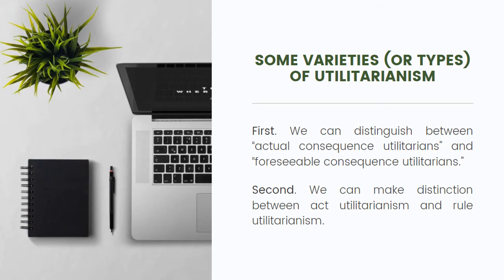What's the difference between actual consequence and foreseeable consequence utilitarianism? In actual consequence utilitarianism, the basis for evaluating the moral rightness or wrongness of an action is based on the actual consequence of the action. In foreseeable consequence utilitarianism, the basis is based on the foreseeable consequences of actions.